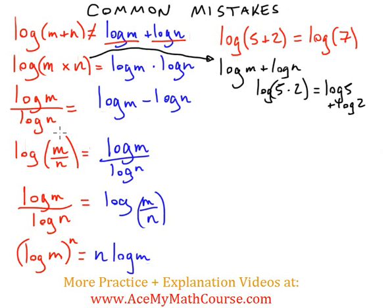Common mistake number 3. Log m divided by log n is equal to log m. By the way, these are not equal, of course.